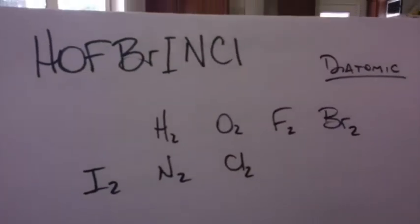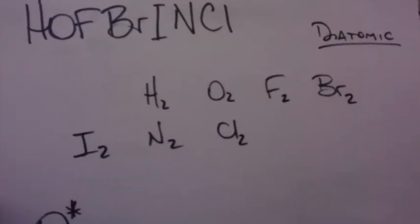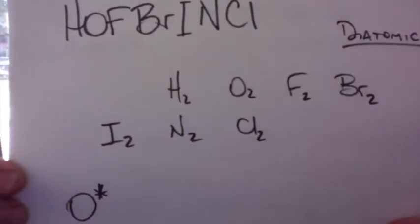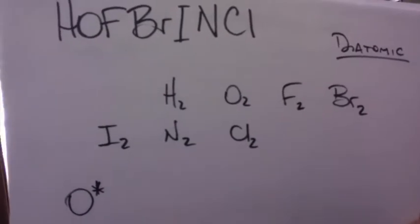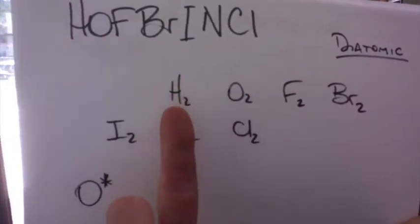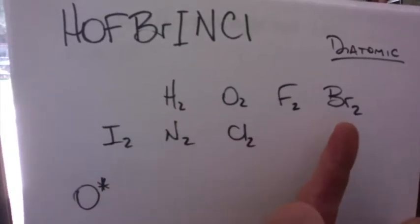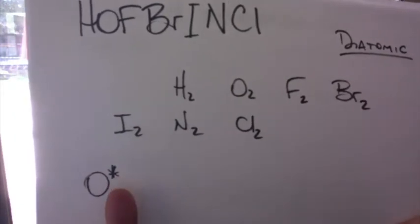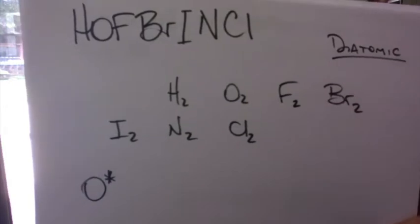The third thing to note is Hoffbrinkel. If you understand chemistry you'll know what I'm talking about — get ready to pause. Hoffbrinkel stands for hydrogen, oxygen, fluorine, bromine, iodine, nitrogen, and chlorine. These are called diatomic gases, which means when you see these elements you'll always see them in twos. Hydrogen is H2, oxygen is O2, fluorine is F2, bromine is Br2, iodine is I2, nitrogen is N2, chlorine is Cl2. If you ever had one single atom you'd write it with an asterisk, because Hoffbrinkel elements are diatomic — they like to be in a buddy system.